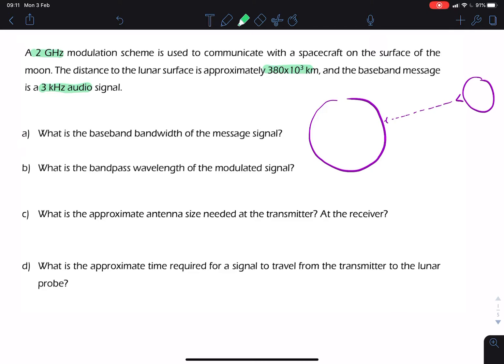So, the first question, what's the baseband bandwidth of the message signal? We're asking about the original signal. The original signal is our 3 kilohertz. So, that's our baseband bandwidth. It's the highest frequency contained in the original signal. So, the baseband bandwidth is the 3 kilohertz.